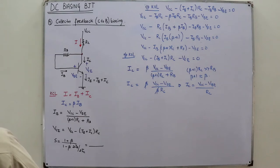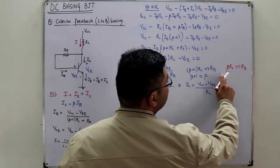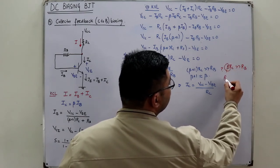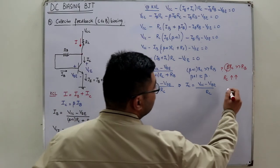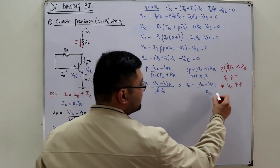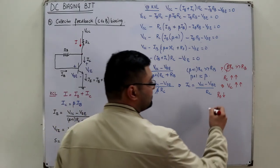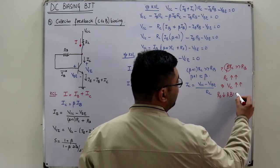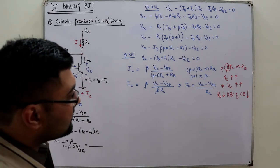Disadvantage: the condition β·RC >> RB requires a very large RC. A large RC means a large voltage drop across the collector, increasing the required biasing voltage. Additionally, a large RC causes RB to decrease, which reduces the reverse bias of the collector-to-base junction — this is a further disadvantage of this configuration.